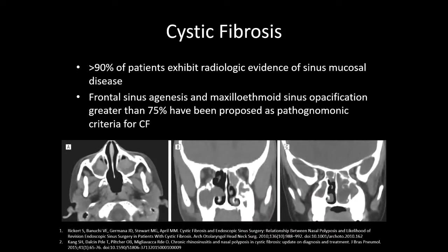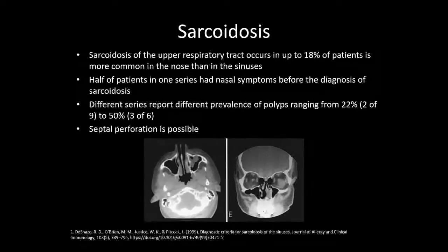Cystic fibrosis is another consideration: over 90% of patients with CF exhibit radiologic evidence of sinus mucosal involvement, and frontal sinus agenesis with maxilloethmoid sinus opacification occurs in greater than 75% and is proposed as pathognomonic. Our patient doesn't have sinus opacification and has no history of transplant. It's highly unlikely a patient would remain undiagnosed into their 50s without needing attention for pulmonary or GI symptoms. Sarcoidosis of the upper respiratory tract occurs in up to 18% of patients and is more common in the nose than the sinuses. The polyp in this patient could represent early sarcoid; septal perforation is usually a later finding.